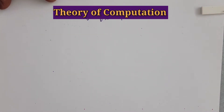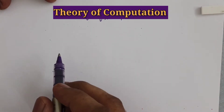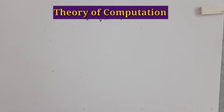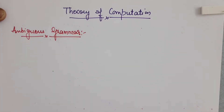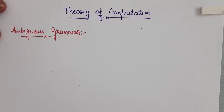Hello my dear friends, welcome to the Theory of Computation lecture series. In this video we are going to see a grammar, and especially a grammar which is an ambiguous grammar. What is an ambiguous grammar? As the term says, this is a grammar which has some sort of ambiguity — there is more than one possibility from this particular grammar. Let us see the definition first and then we will see an example.